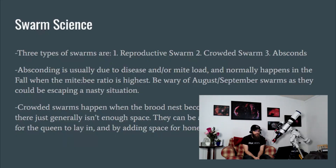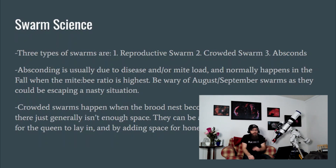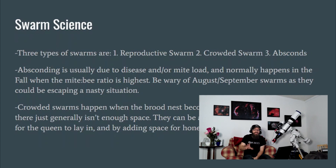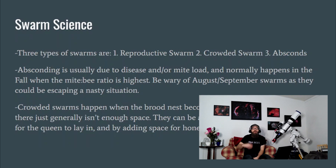There are three types of swarms — or really one true type and a couple of problems that look like swarms. The three types are: reproductive swarm, crowded swarm, and absconding. Absconding is usually due to disease or high mite load, and it normally happens in the fall when the mite-to-bee ratio is really high. Be wary of August and September swarms — they might look giant, but that's usually a sign the colony found conditions untenable back home, typically due to a high mite load.